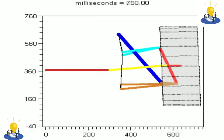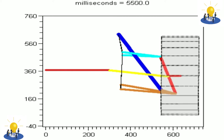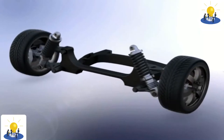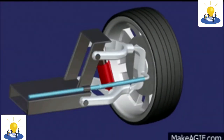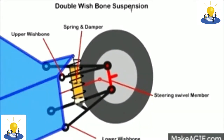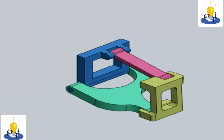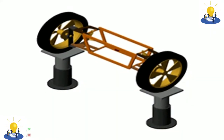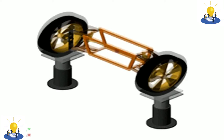In automobiles, a double wishbone suspension is an independent suspension design using two occasionally parallel wishbone-shaped arms to locate the wheel. Each wishbone or arm has two mounting points to the chassis and one joint at the knuckle. The shock absorber and coil spring mount to the wishbones to control vertical movement. Double wishbone designs allow the engineer to carefully control the motion of the wheel throughout suspension travel, controlling such parameters as camber angle.